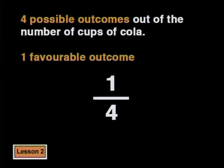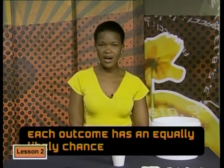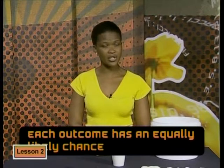Only one out of four possible outcomes will be the favorable outcome, and that is normally written like a fraction. Probabilities are written as the number of favorable outcomes out of the total number of possible outcomes. But there's one thing we need to be careful of when we use a fraction to calculate probability.